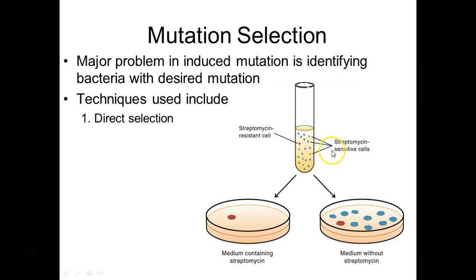Looking at bacteria, you can't tell one from another, but if you have ones that are resistant to antibiotics, they'll grow in the presence of antibiotics and the others won't. Direct selection means only your mutant grows — nothing else. In the case of antibiotic resistance, only the resistant mutant should grow. But is that always possible? No.